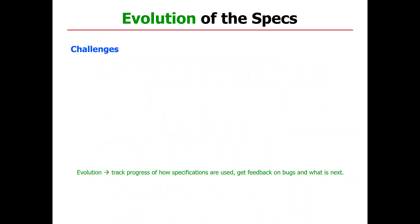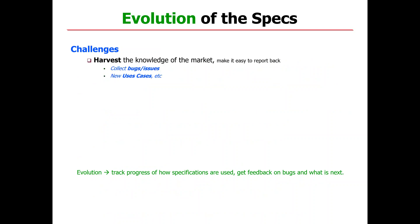The final step is evolution. The challenge in evolution is always to harvest the knowledge of the market. You need to get back issues, problems, new use cases, and things that your specifications don't do. It's always difficult, but you always find someone willing to provide feedback. The voice of that particular customer is the one you need to listen to. Internally you may decide to act on it or not, but at least that feedback needs to come in — if you don't have it, you don't know where to go.